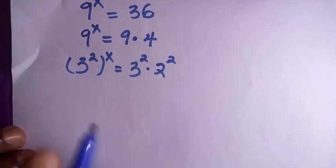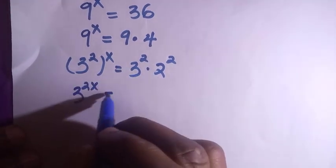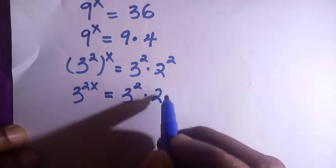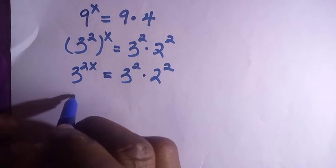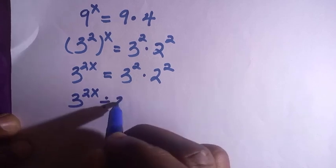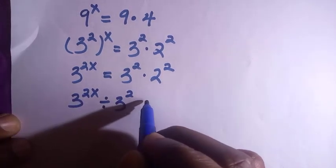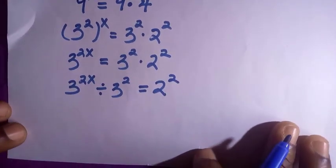If I multiply 2 by x following the rule of indices we have 3 raised to power 2x. And if I divide, or let's say it equals to 3 raised to power 2 times 2 raised to power of 2. By dividing both sides by 3 raised to power 2, then we have 3 raised to power 2x divided by 3 raised to power of 2 equals to 2 raised to power of 2. So by applying the division of indices.